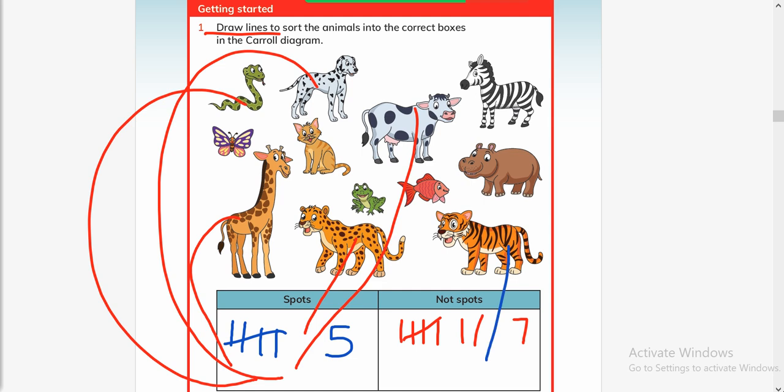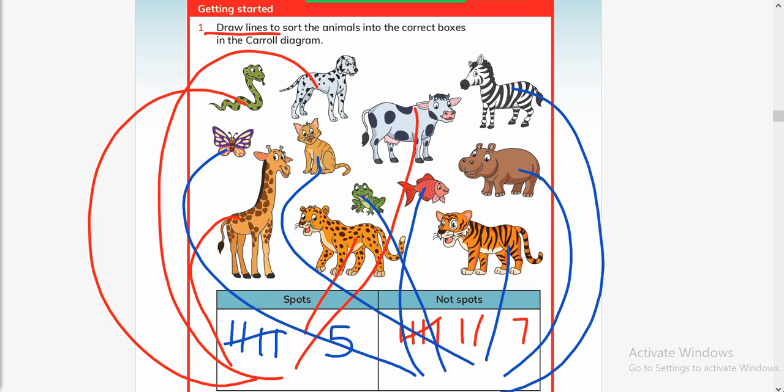And these animals are without spots, so we will show them the way to go to the 'not spots' box. Anyone left? I think all are done. Yes, four, five, six, seven lines - seven blue lines, and there are five red lines, so it means all is done.